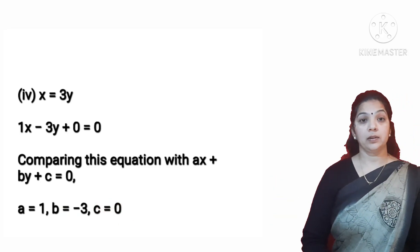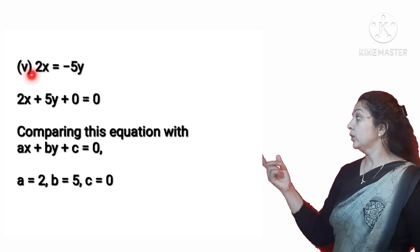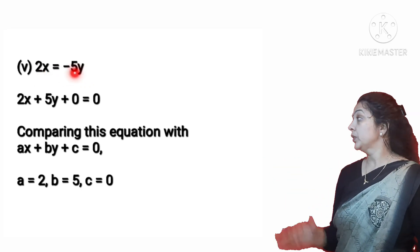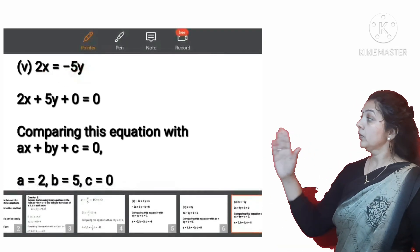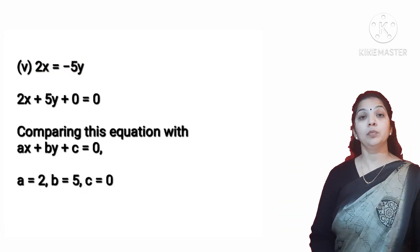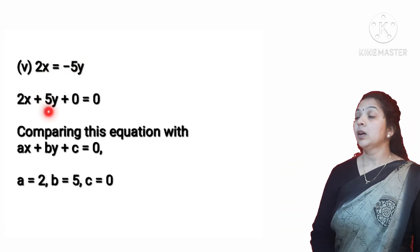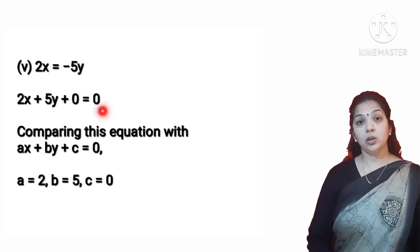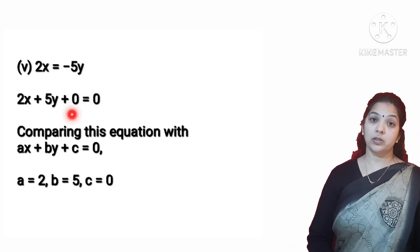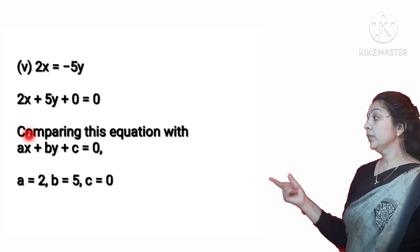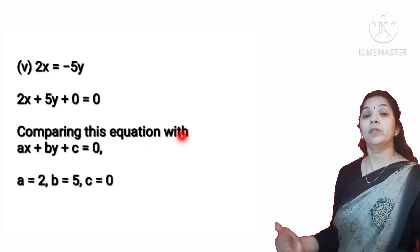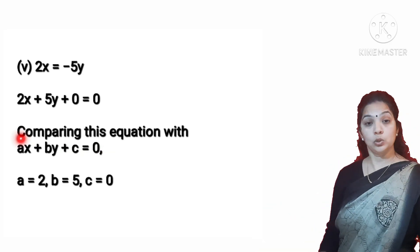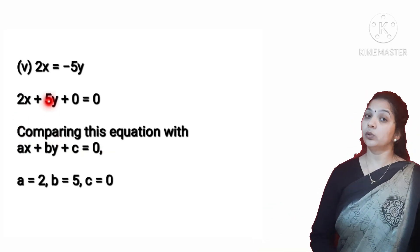The fifth part gives 2X = minus 5Y. Taking 5Y to the left hand side, it becomes 2X + 5Y + 0 = 0. Since there is no constant term, we consider it as 0. Comparing with the general form, A = 2, B = 5, and C = 0.